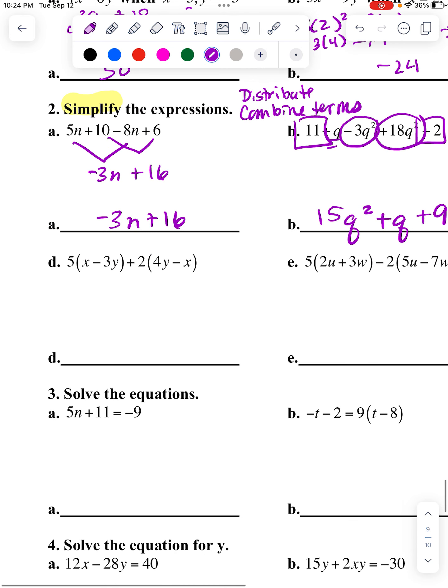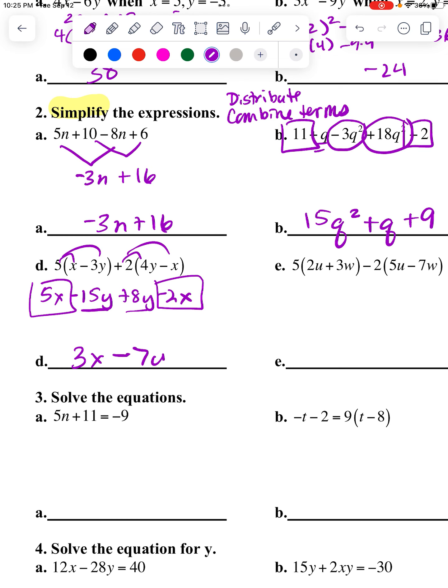Here I do need to distribute. So this becomes 5X minus 15Y. And this becomes 8Y minus 2X. So my two X terms are alike. They go together. They become 3X. My two Y terms are alike and go together and become negative 7Y.